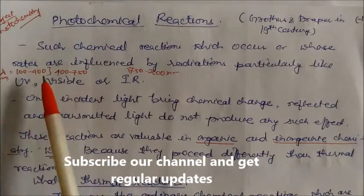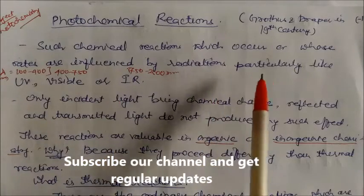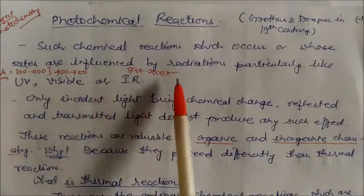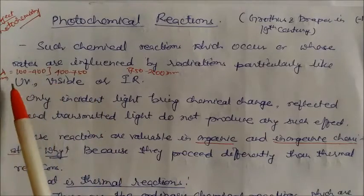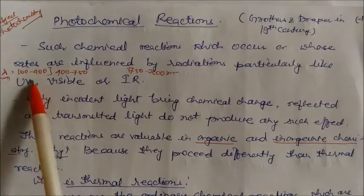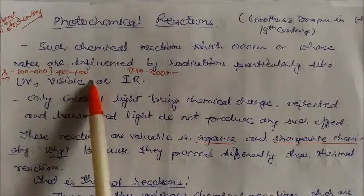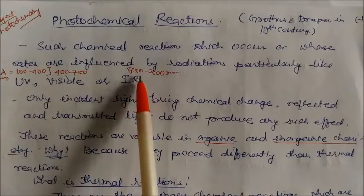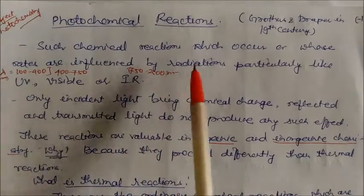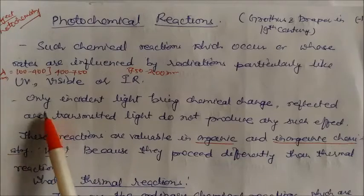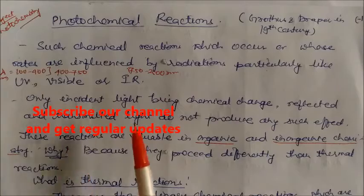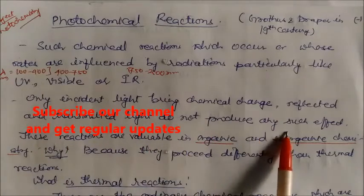A photochemical reaction is a chemical reaction whose rates are influenced by radiations, particularly ultraviolet, visible, or infrared radiations. The range of these radiations: ultraviolet is 100 to 400 nm, visible is 400 to 750 nm, and infrared is roughly 750 to 2500 nm. Only incident light which brings chemical change matters; reflected and transmitted lights do not produce any such effect.